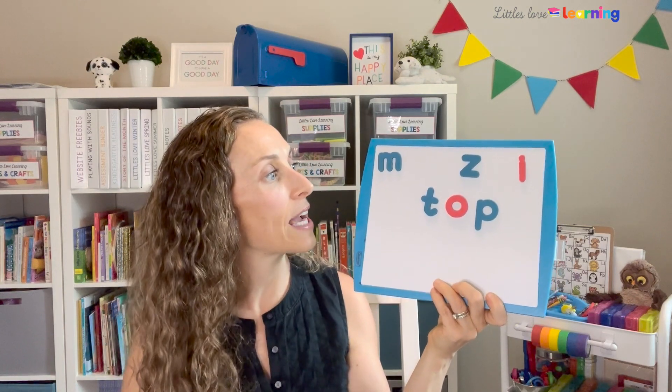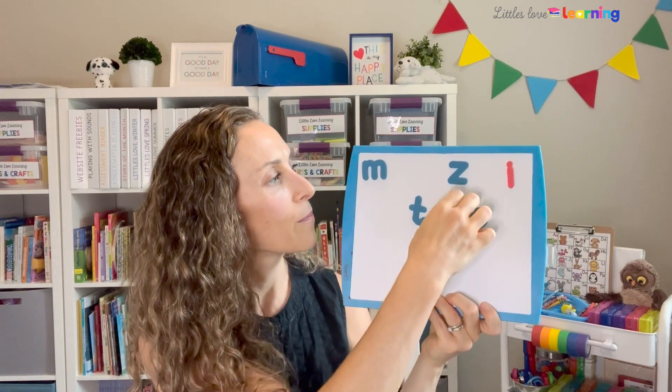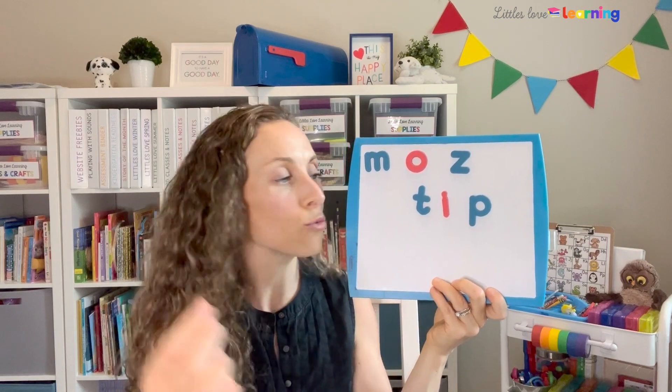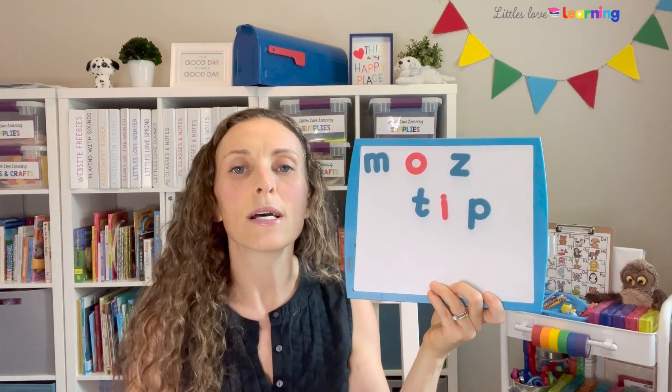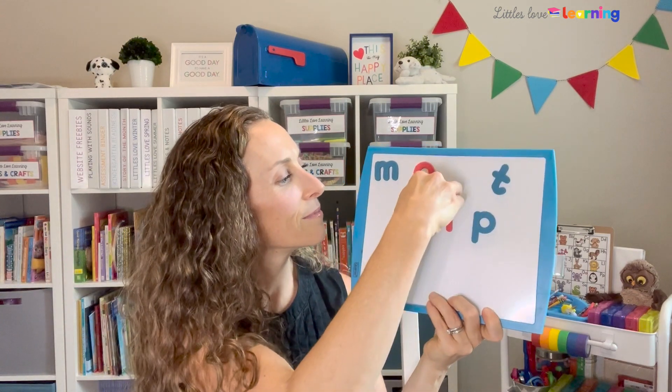Then I would say: your word is 'top' — change 'ah' to 'i.' They find the 'ah,' swap in the letter I, and read it: T, I, P — tip. Tip is my new word. Then: your word is 'tip' — change T to Z. What's your new word? Z, I, P — zip. Your new word is zip. So in this second example, I'm telling them to change a sound and then they have to figure out what the new word is — which is why it's focusing on reading.